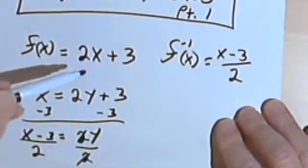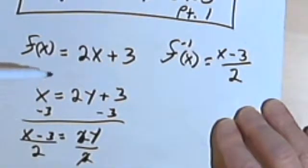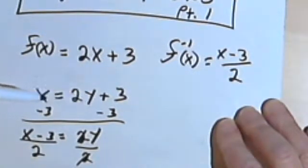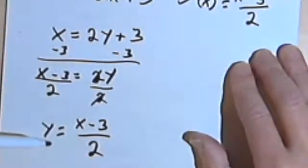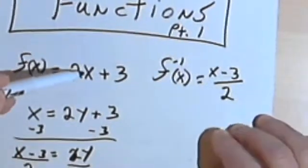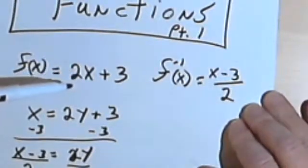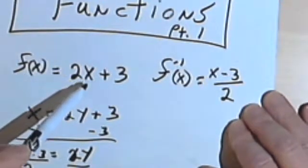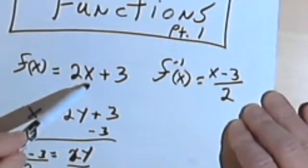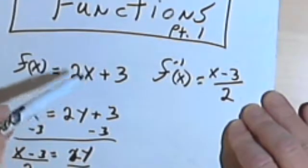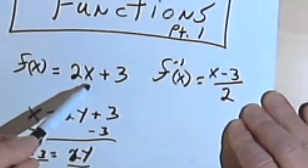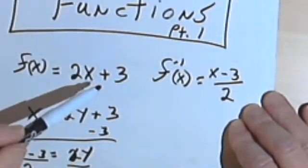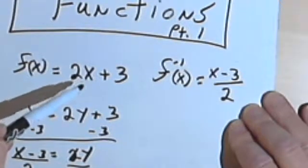One way to think about inverse functions: if we take the x's and y's that we start out with, swap their positions, and then solve to get a new function, that new function will be the inverse of the first one. Another way to think about it is to consider everything that happened to x in the original function — we had an x, multiplied it by 2, then added 3.